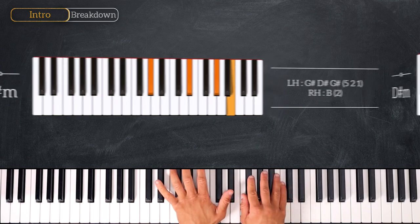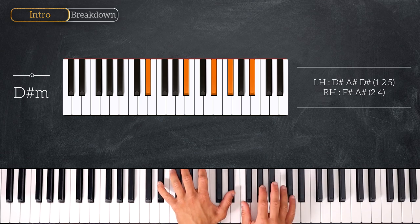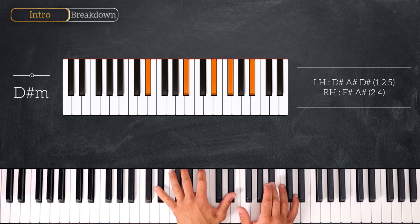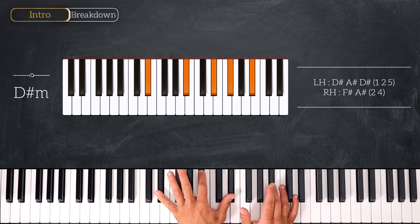Next we'll play a D sharp minor chord. So we have D sharp, A sharp and D sharp on the left and A sharp on the right hand. And here we are on the fourth degree of the scale.